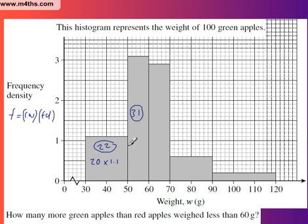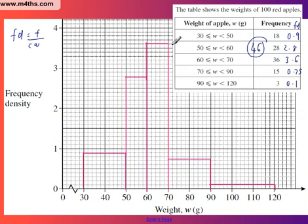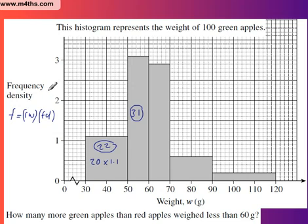So what we can see from here, the frequency, the number of them, is the class width multiplied by frequency density. So I've now got 53 in total. So let's go back, and I've got 46. 53 subtract 46. Remember, these are green, and these are red. So what was our question? How many more green apples than red apples weighed less than 60 grams? The answer, 7.